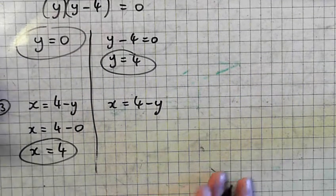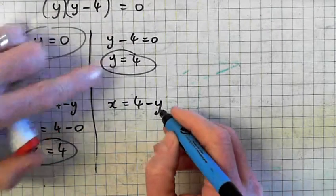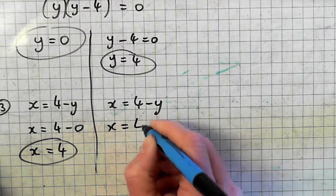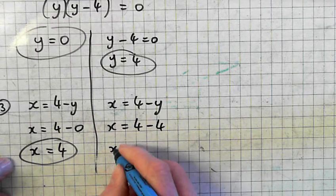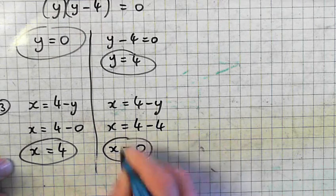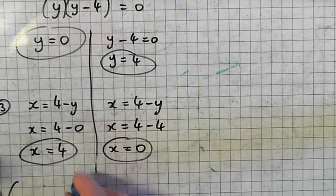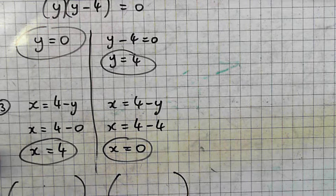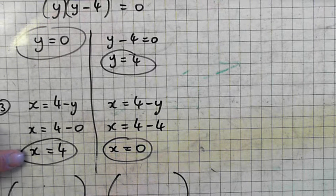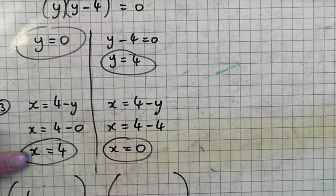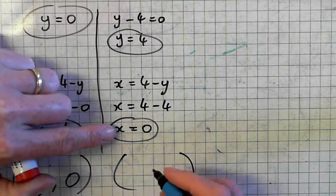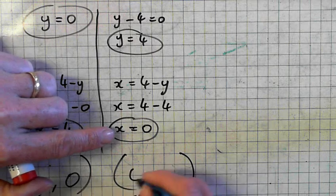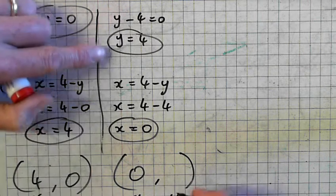And then over here, put in your y value over here. Y is 4. So my two coordinates. Over here, x is 4, x is 4, y is 0. And on the right-hand side, x is 0 and y is 4.